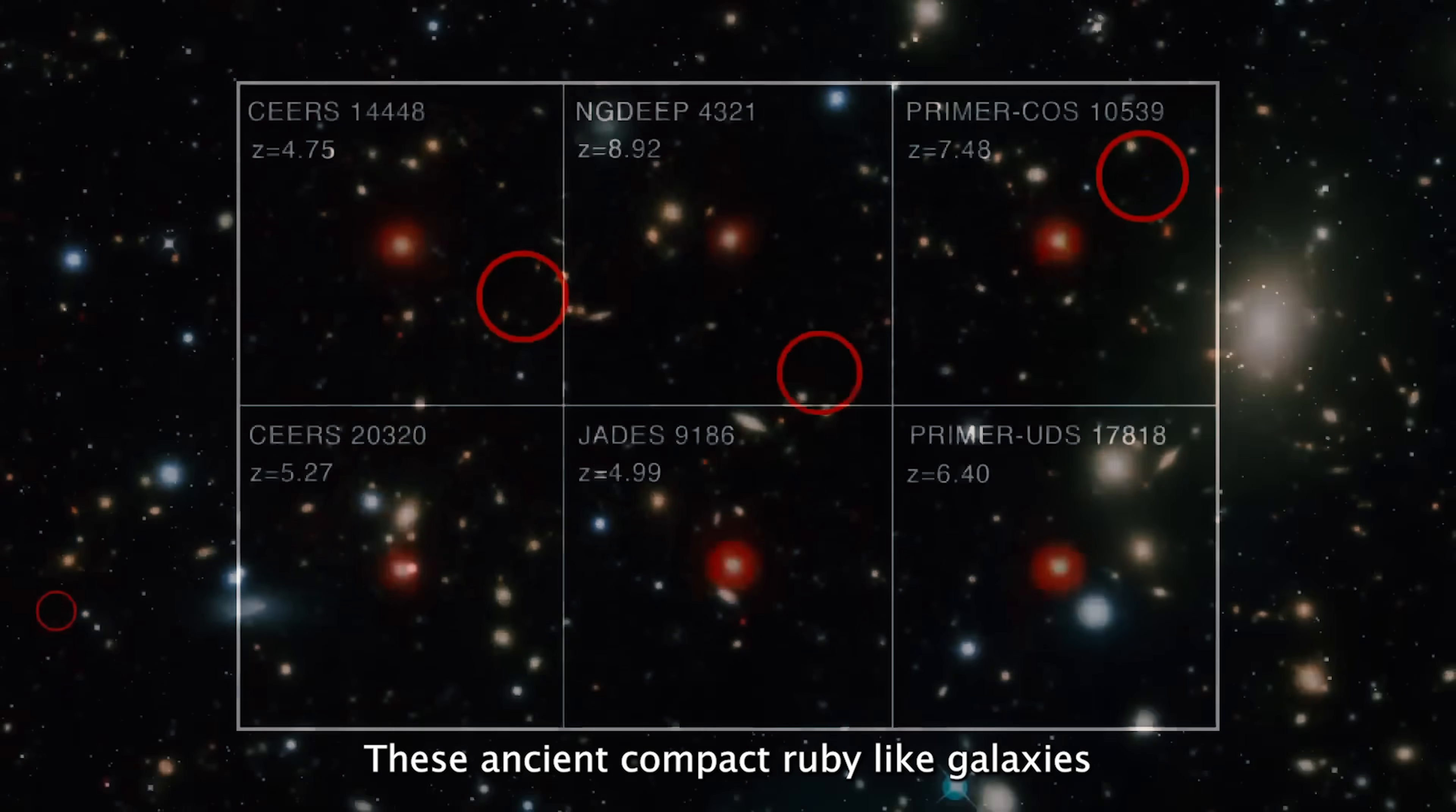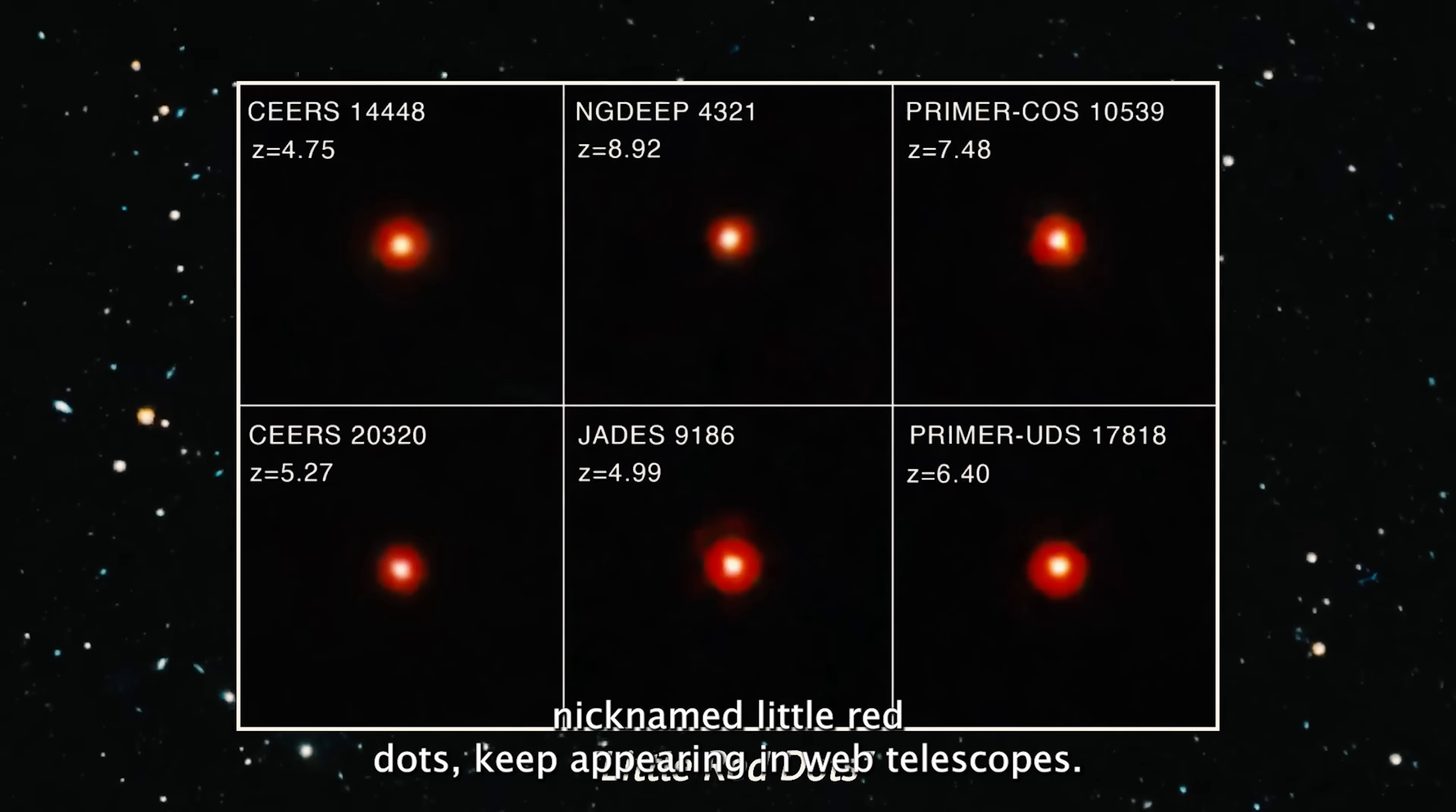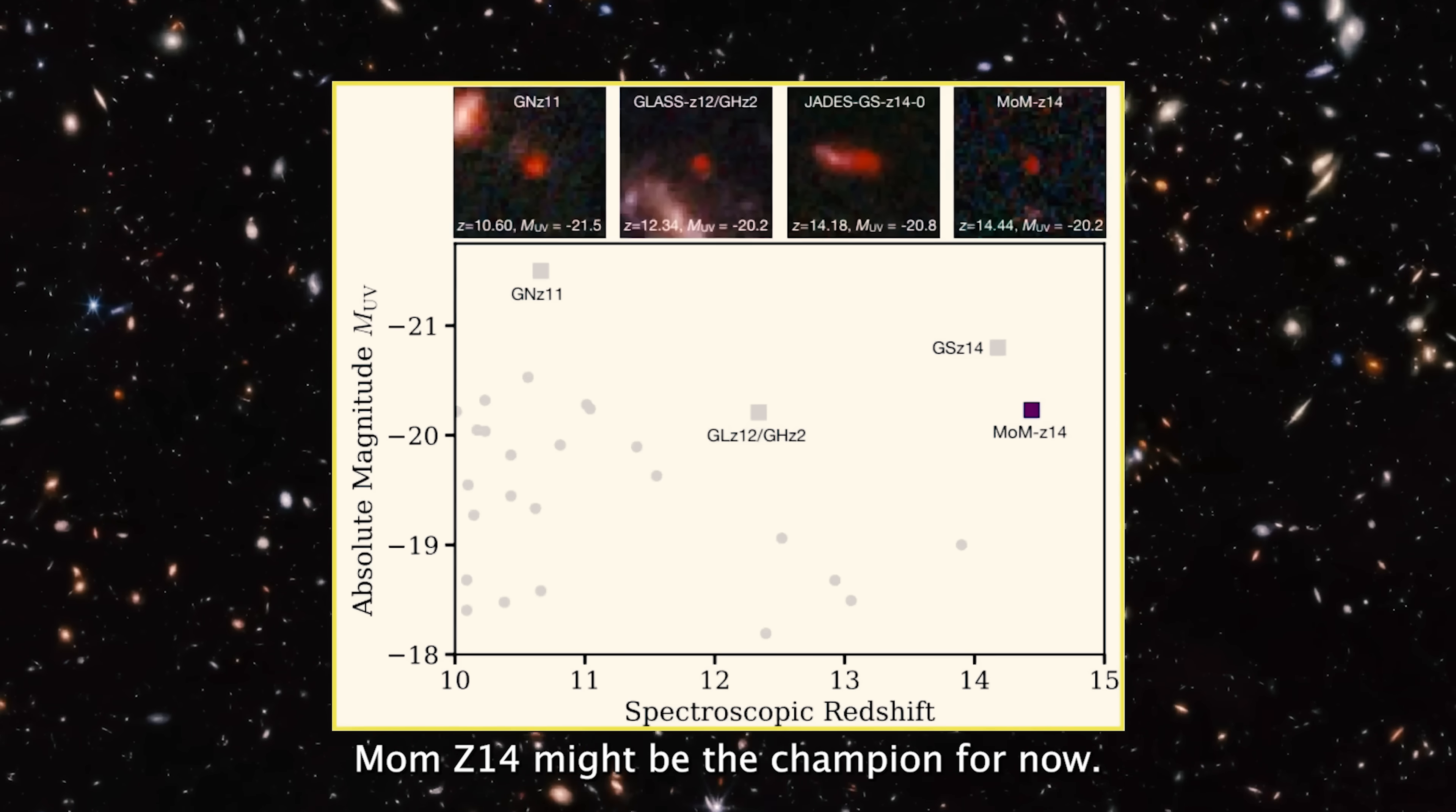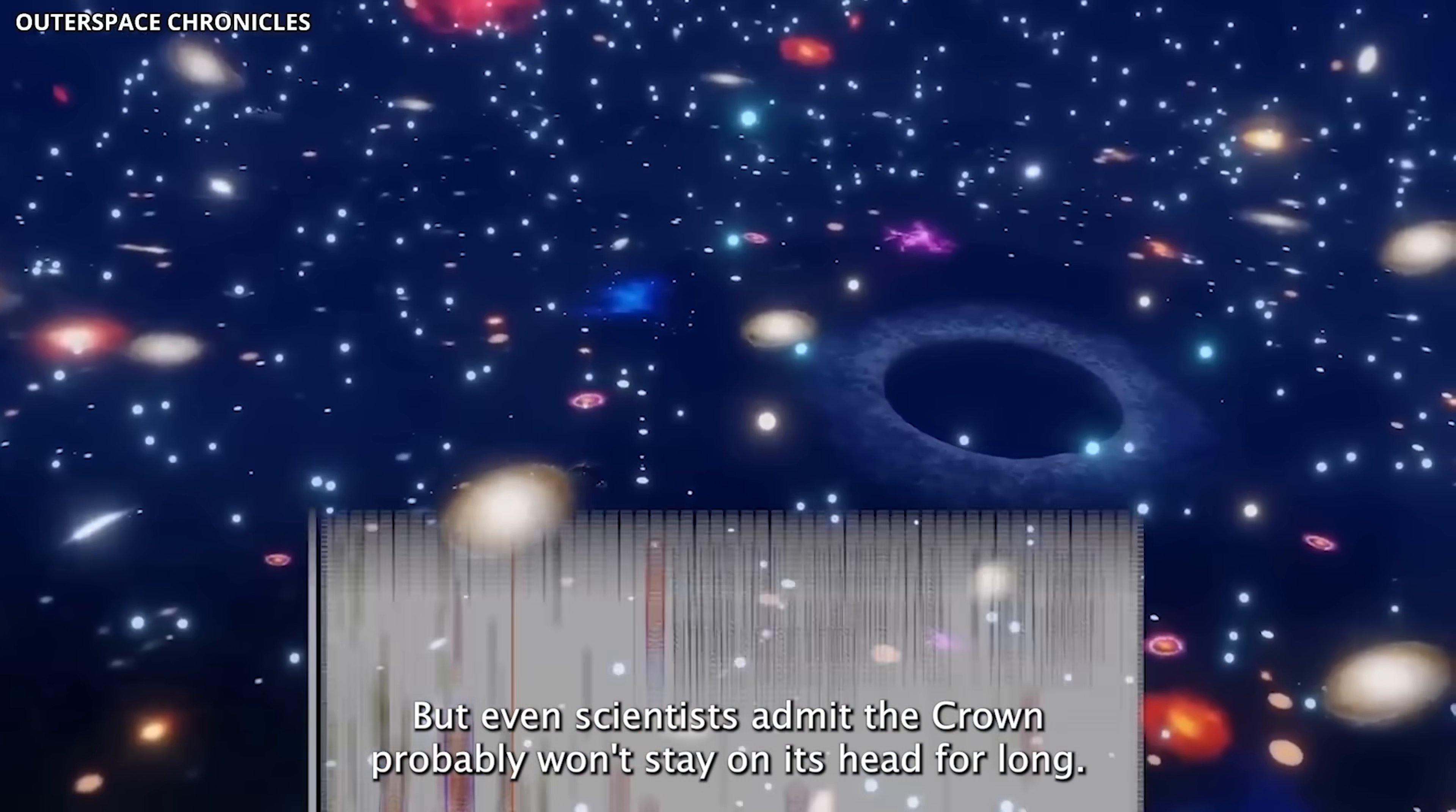These ancient, compact, ruby-like galaxies, nicknamed little red dots, keep appearing in Webb Telescope's observations. MomZ 14 might be the champion for now, but even scientists admit the crown probably won't stay on its head for long.